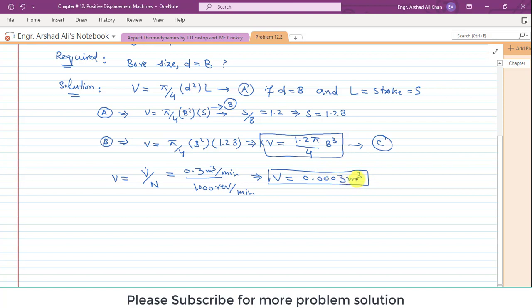Putting the value of V in expression C, expression C becomes 1.2 pi by 4 B cube is equal to 0.0003.